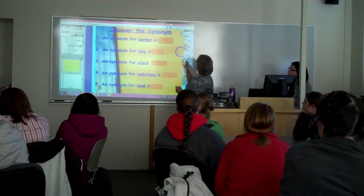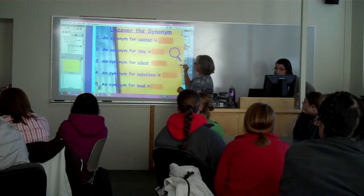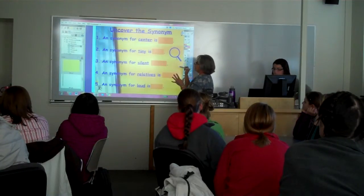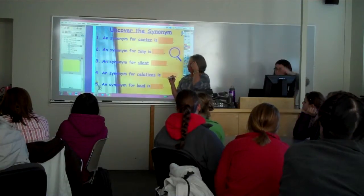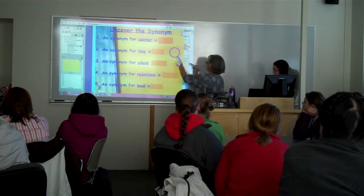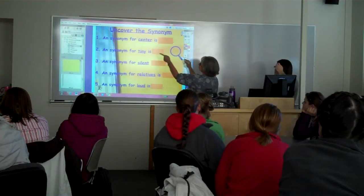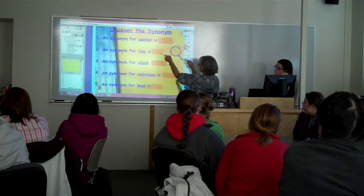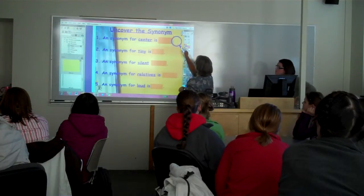One of the things that kids also ooh and ah over is the magic revealer — the spyglass. There's a pack you can download from Promethean Planet that has several different magic spyglasses. For a synonym activity, you give them a word and they answer, then you bring the spyglass over to reveal the answer.